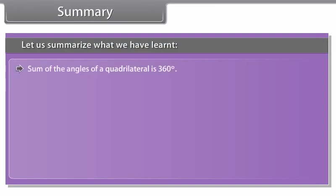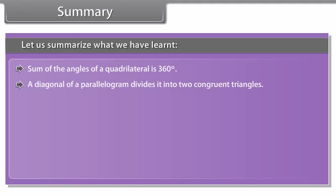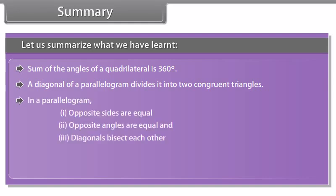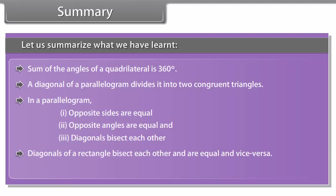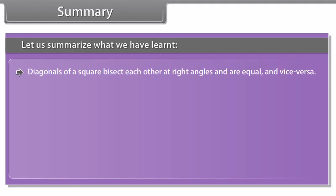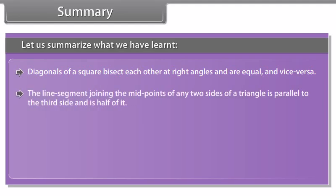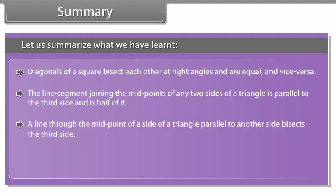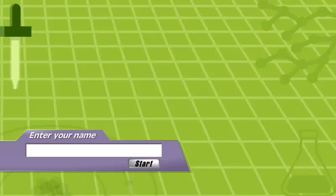Summary: The sum of angles of a quadrilateral is 360 degrees. A diagonal of a parallelogram divides it into two congruent triangles. In a parallelogram, opposite sides are equal, opposite angles are equal, and diagonals bisect each other. Diagonals of a rectangle bisect each other and are equal, and vice versa. Diagonals of a rhombus bisect each other at right angles, and vice versa. Diagonals of a square bisect each other at right angles and are equal, and vice versa. The line segment joining the midpoints of any two sides of a triangle is parallel to the third side and is half of it. A line through the midpoint of a side of a triangle, parallel to another side, bisects the third side. The quadrilateral formed by joining the midpoints of the sides of a quadrilateral is a parallelogram.